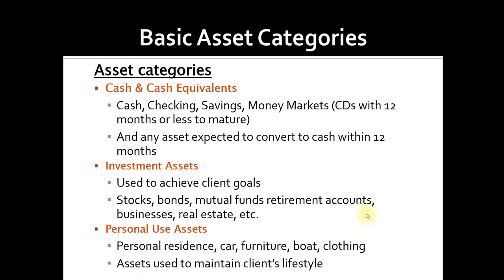Personal use assets are things like furniture, maybe a motorcycle, clothing, and things to that effect. Usually personal use assets are not things we consider instrumental in our planning outcomes. Most clients may find it difficult if, as one of your recommendations, you say to go sell some clothing or grandma's furniture. Typically, the most emotional assets are personal use assets, and those are ones we want to stay away from when making recommendations. If it's a car the client can't afford, that's a different story, but typically a personal use asset is kept because the cash they can get for it is not worth what the client values that asset at. These assets are used to maintain the client's lifestyle.